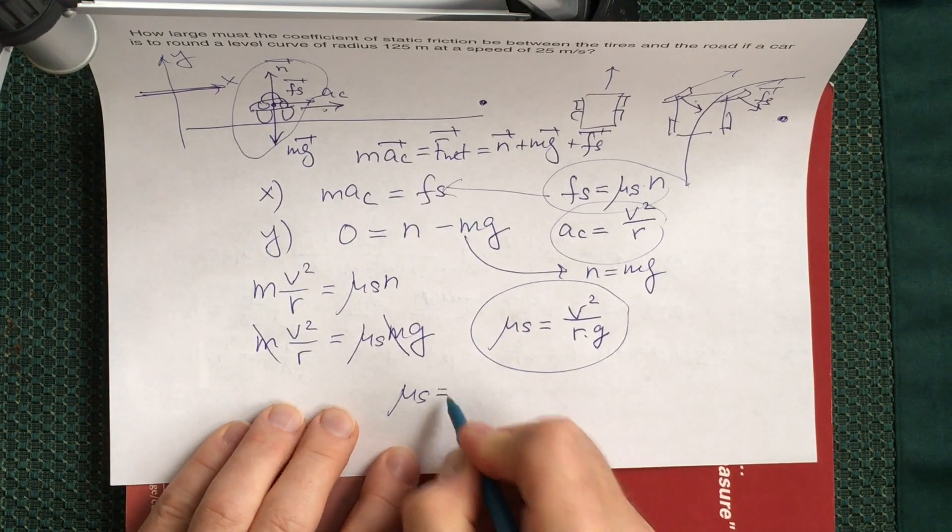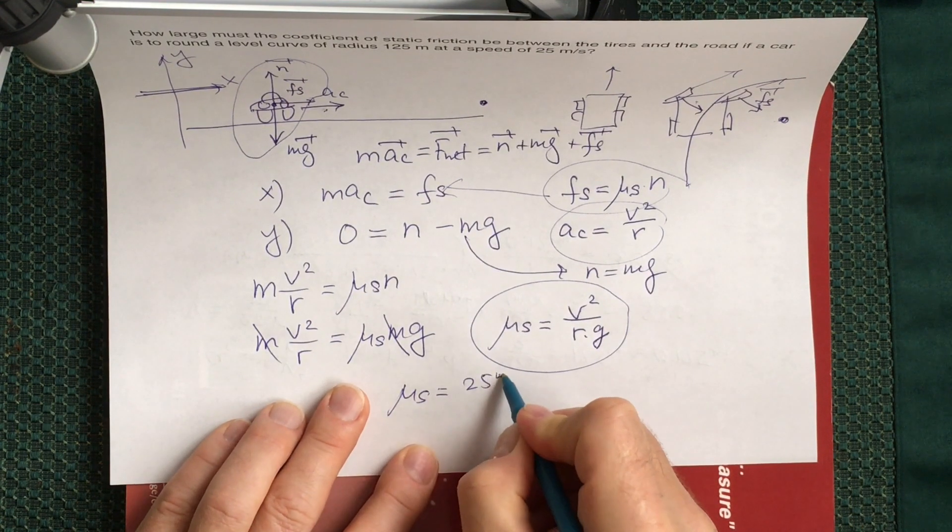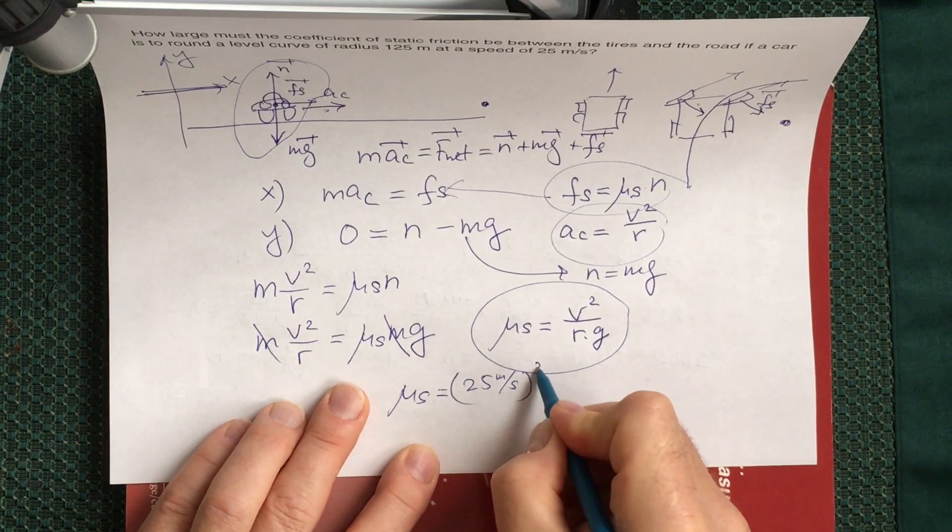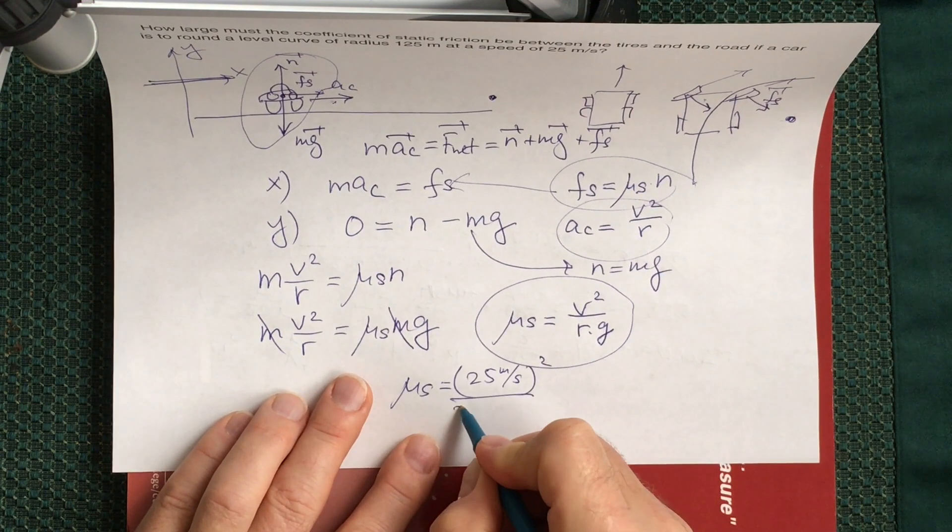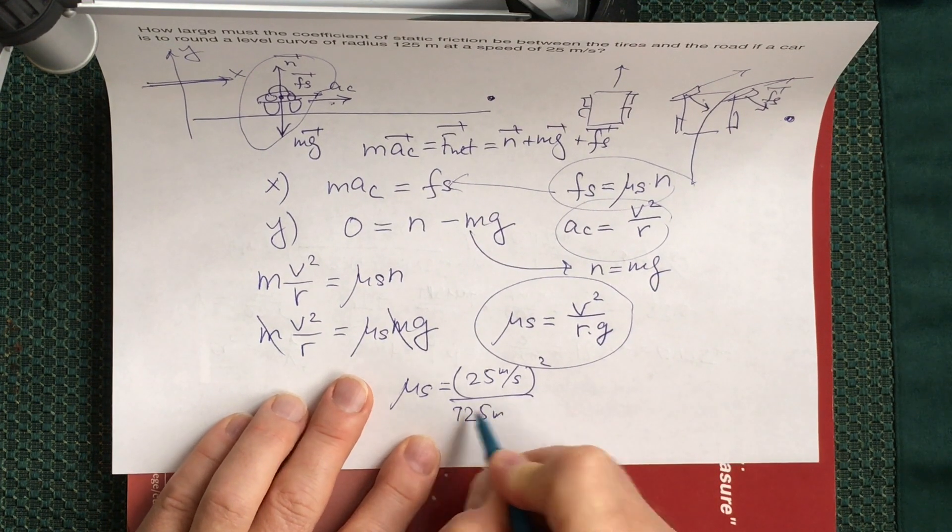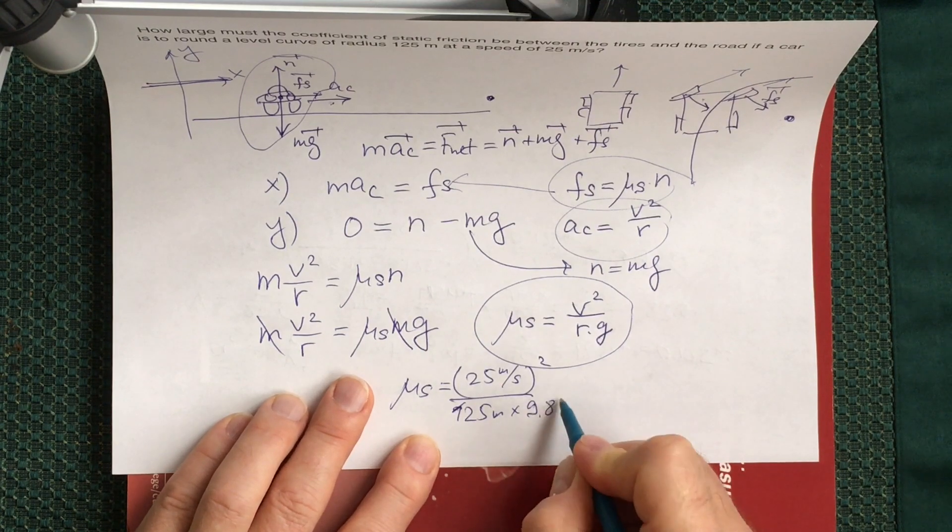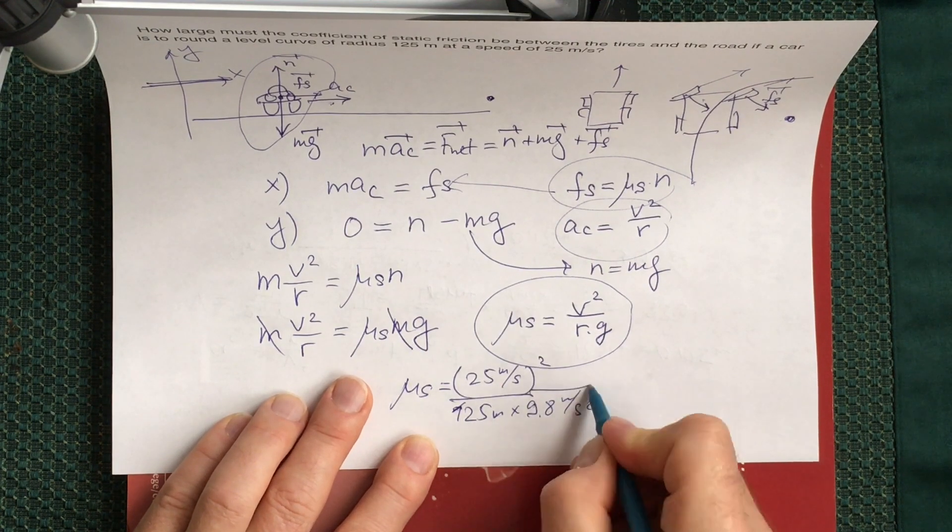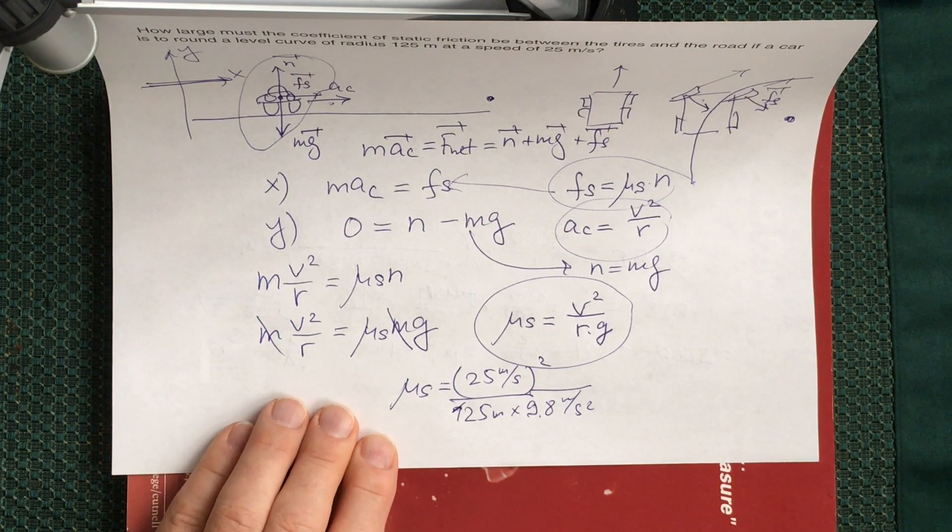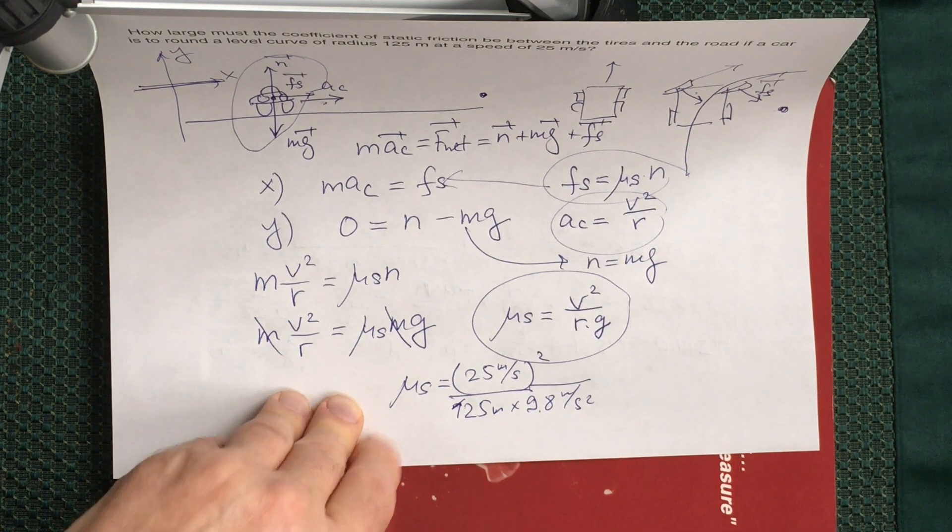So mu_s would be equal to 25 meters per second squared divided by 125 meters times 9.8 meters per second squared. All units will be canceled and you will be able to calculate the number. We solved the problem completely.